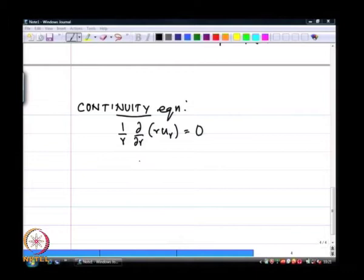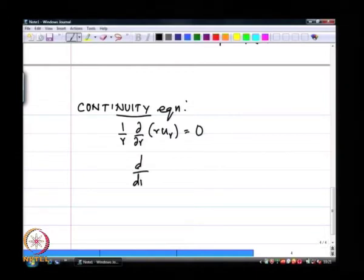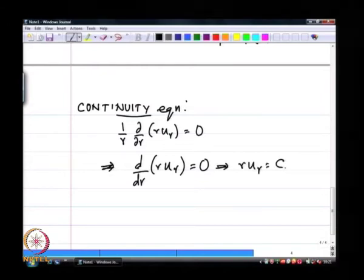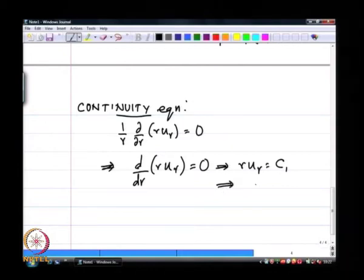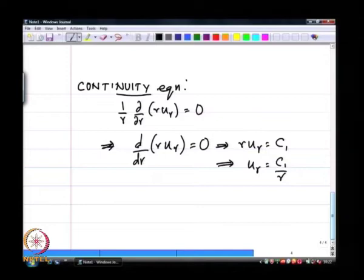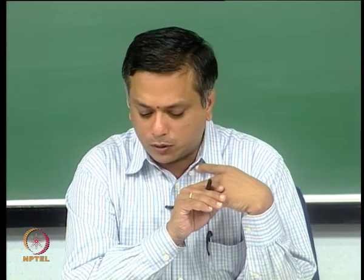If I simplify this and replace partial derivatives with total derivatives because u_r is only a function of r, then u_r can only be of the form c1 over r. So if there is a radial velocity in this flow, it can only be of the form c1/r, where c1 is some arbitrary constant yet to be determined.